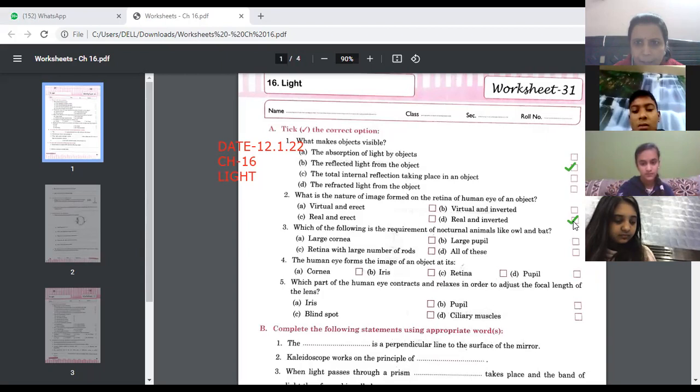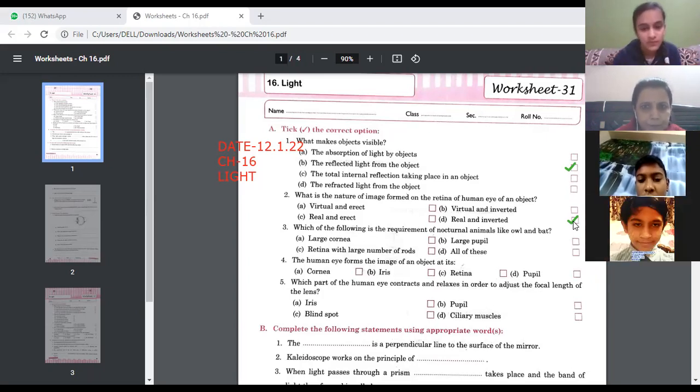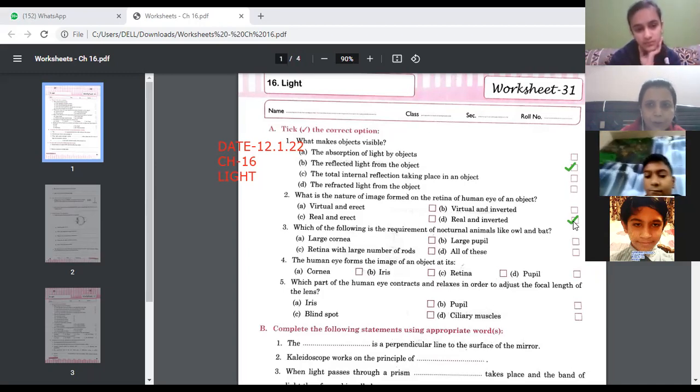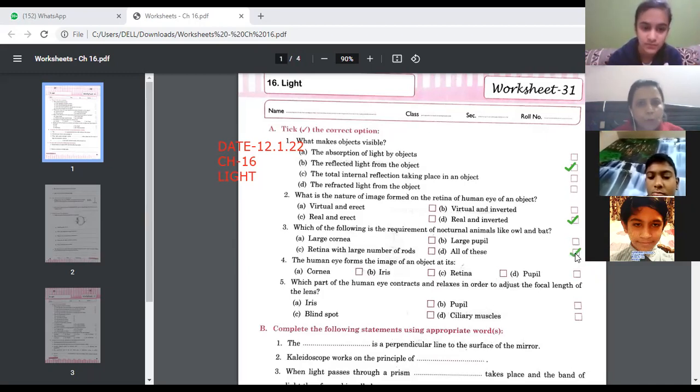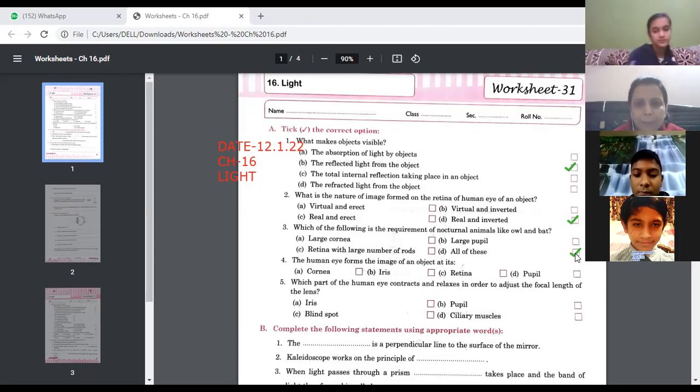Number three, which of the following is the requirement for nocturnal animals like owl and bat? Yes Veronica. Large cornea, large pupil, retina with large number of rods. So the answer will be all of these. These are the requirements of the nocturnal animals like owl and bat.